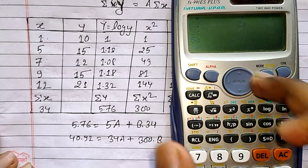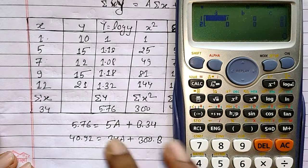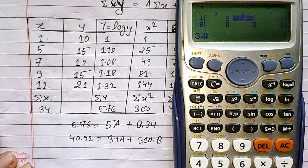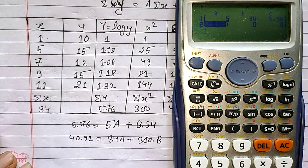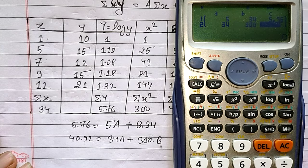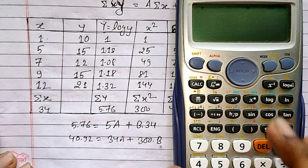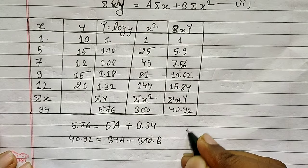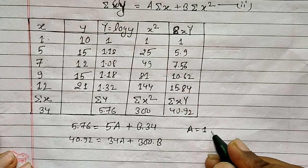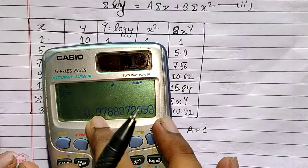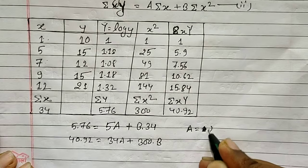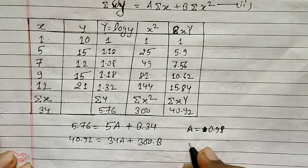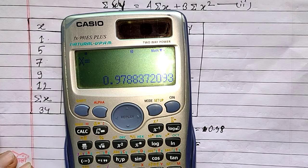On the calculator, go to Mode 5-1 and enter the coefficient values: 5, 34, 5.76 for the first equation, and 34, 300, 40.92 for the second. After pressing equals, we get capital A ≈ 0.97, which we can write as approximately 0.98, and capital B = 0.025.